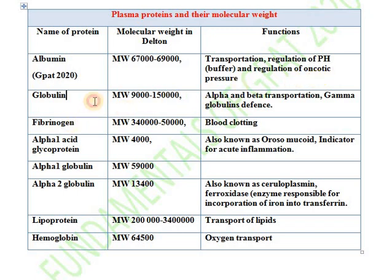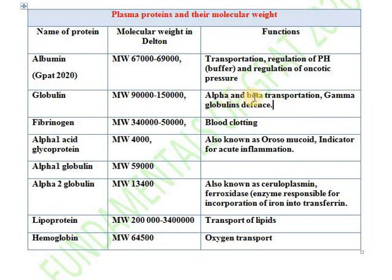Next plasma protein is globulin. It has a molecular weight of around 90,000 to 1,500,000 daltons. There are different types: alpha globulin, beta globulin, and gamma globulin. Alpha and beta globulins are involved in transportation, whereas gamma globulins are involved in the defense of the body.